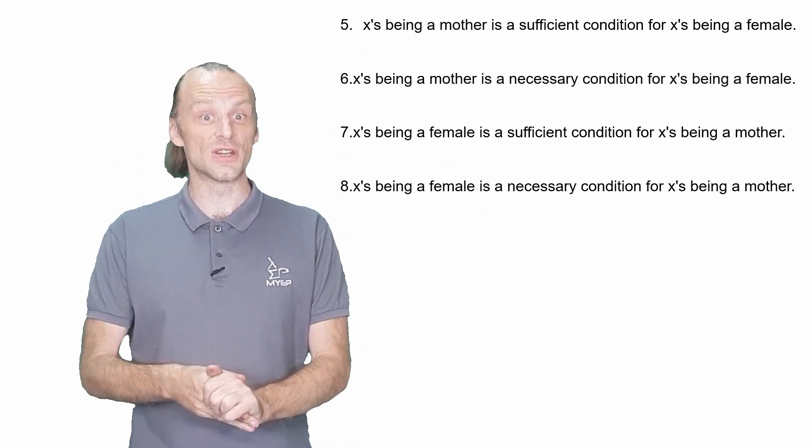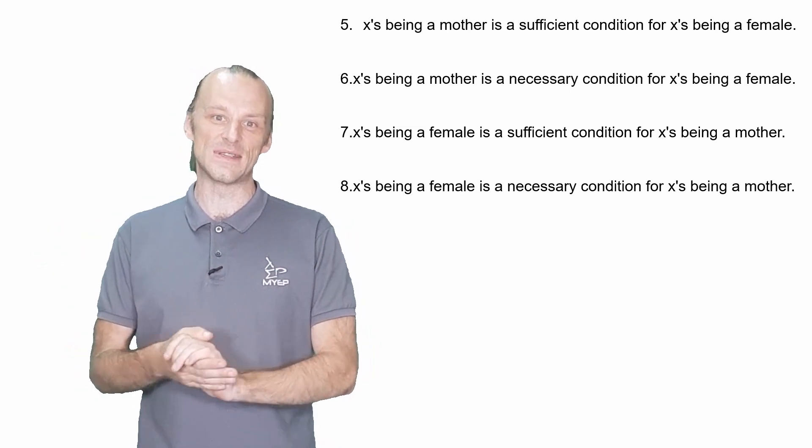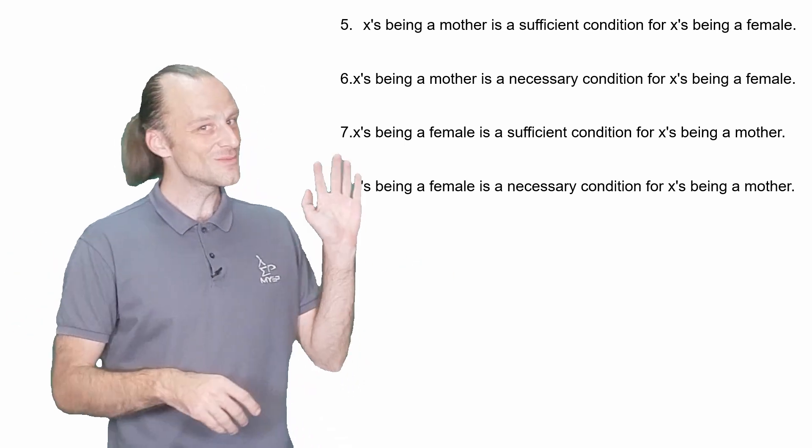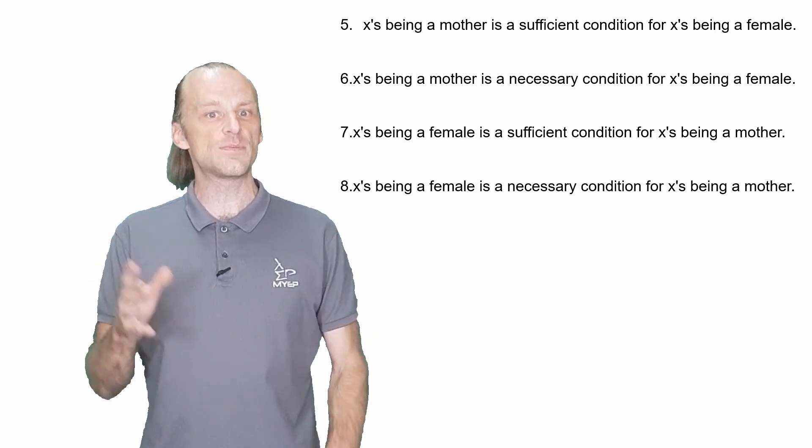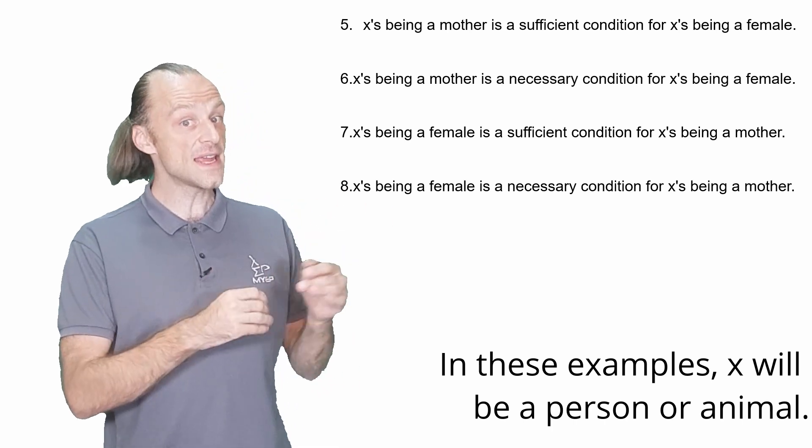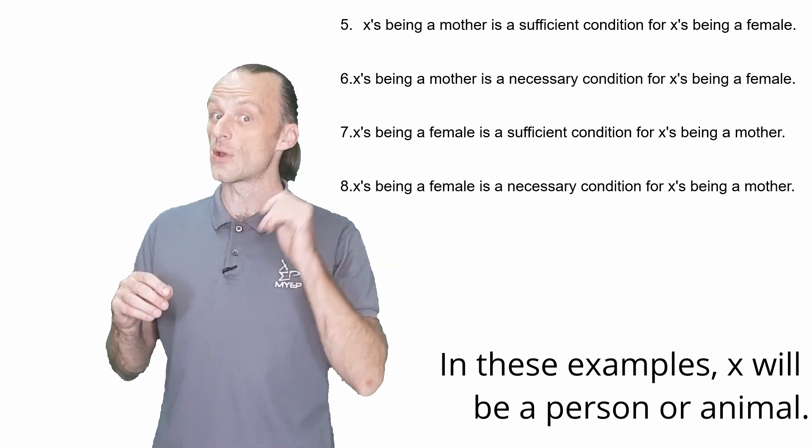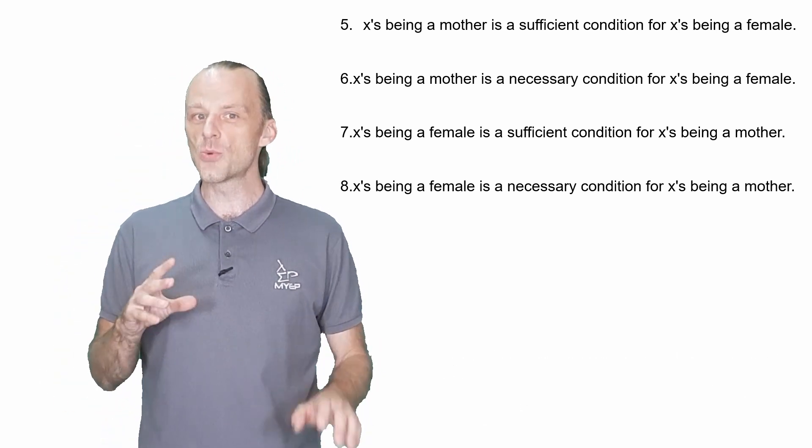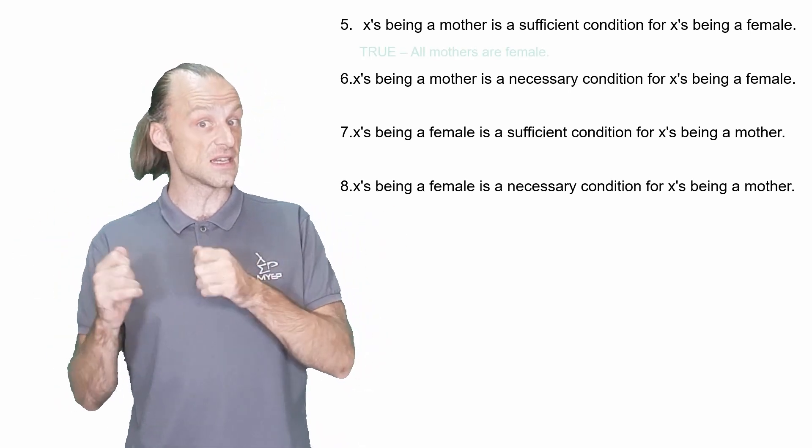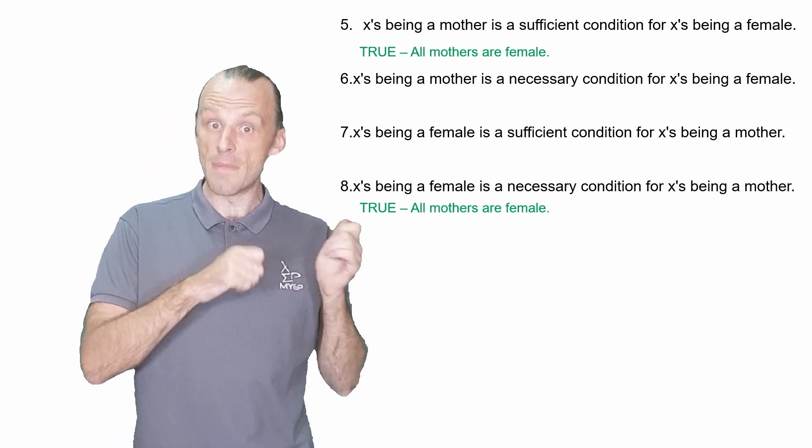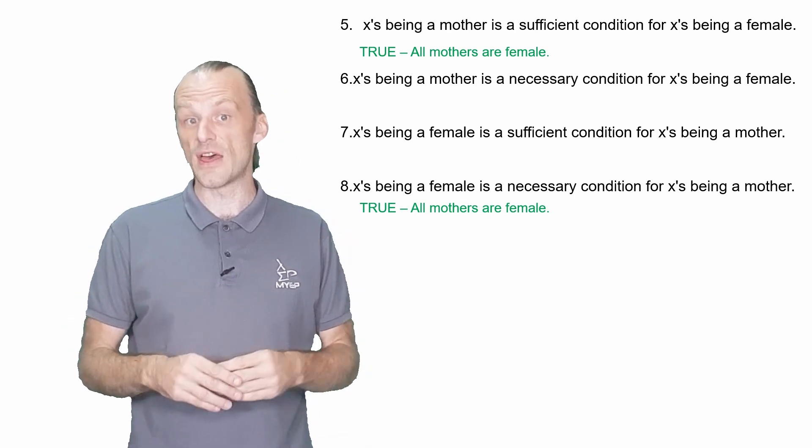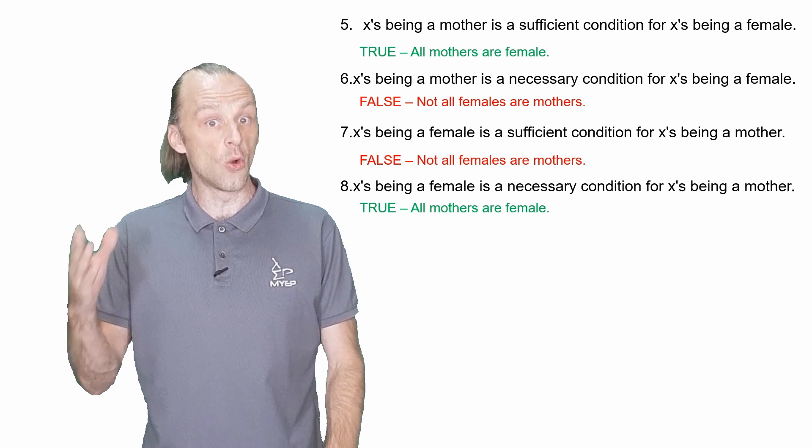Here are the next four examples from Swartz's notes, and I could easily have changed these examples to be something else, but I chose not to. But why would I consider changing them at all, you ask? Well, let's look. Five and six ask if X's being a mother is a necessary or sufficient condition for X's being female, and seven and eight ask if X's being female is a necessary or sufficient condition for X's being a mother. According to Swartz's answer key, five and eight are both true because all mothers are female. So if X's a mother is true, then X's female must also be true. And if X is not female, then that means they are definitely not a mother.